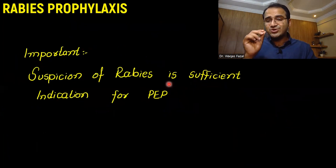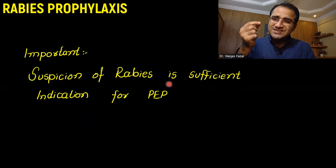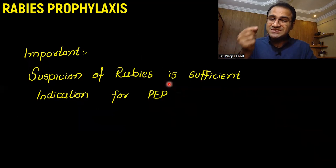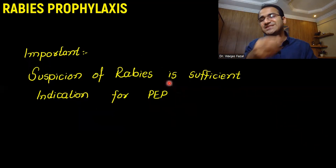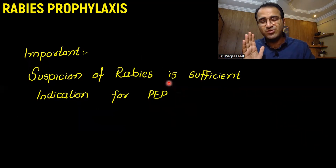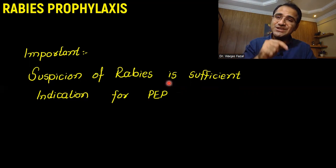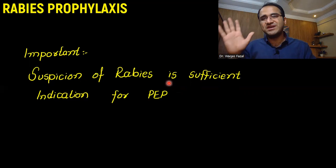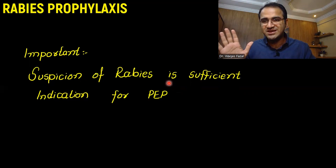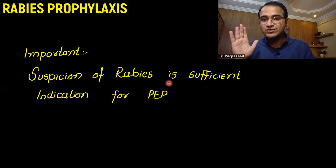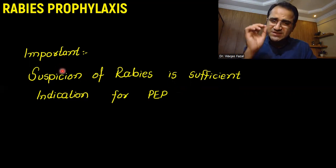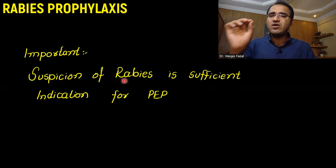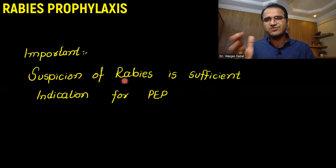An important thing to remember is that even the slightest suspicion of rabies is an indication for post-exposure prophylaxis, because if the patient develops symptomatic rabies, it is a fatal disease and you cannot protect them at that stage. So even suspicion of rabies is a sufficient indication for post-exposure prophylaxis.